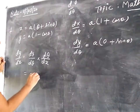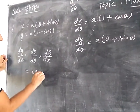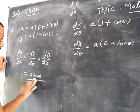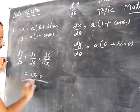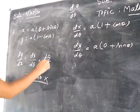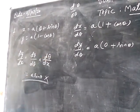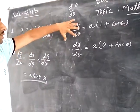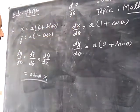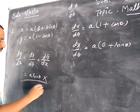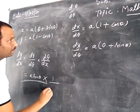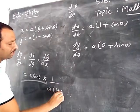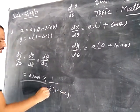So dy by d theta is a·sin theta, multiplied by d theta upon dx, which equals one upon a(1 plus cos theta).